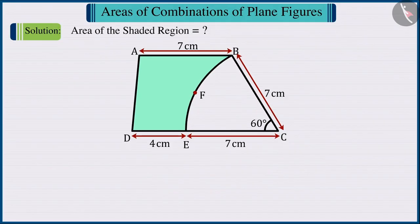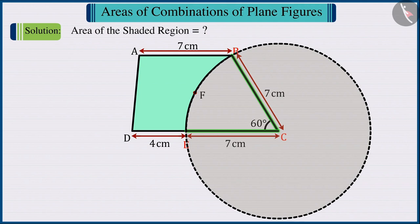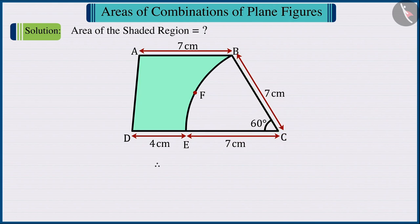From the figure here, we can see that CE will be equal to CB, because it represents the radii of the circle, the measure of which is 7 cm. Therefore, we can say that side CD will be equal to the sum of the measures of the sides CE and ED.